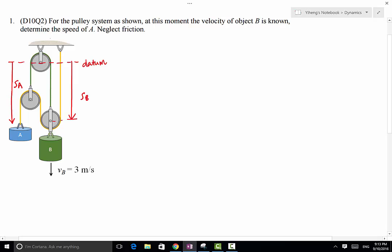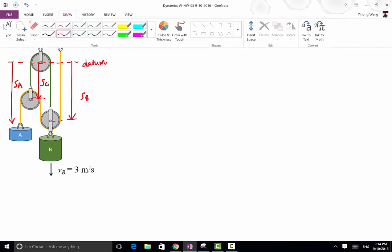And now we still cannot establish the relation between the motion of object A and the motion of object B. Therefore, we need an intermediate step. I'm going to draw another position vector from here to here. As you can see, again, my position vector starts from the datum. This is my SC. And now with SC, I'm ready to establish the relation between the motions through the length of the continuous cables.